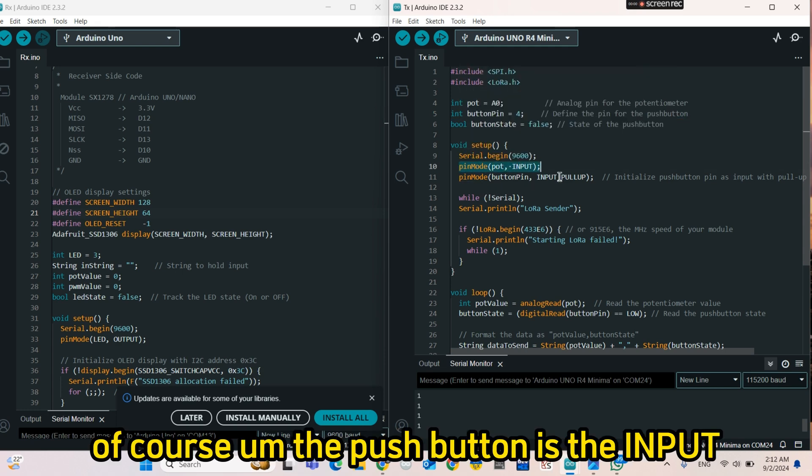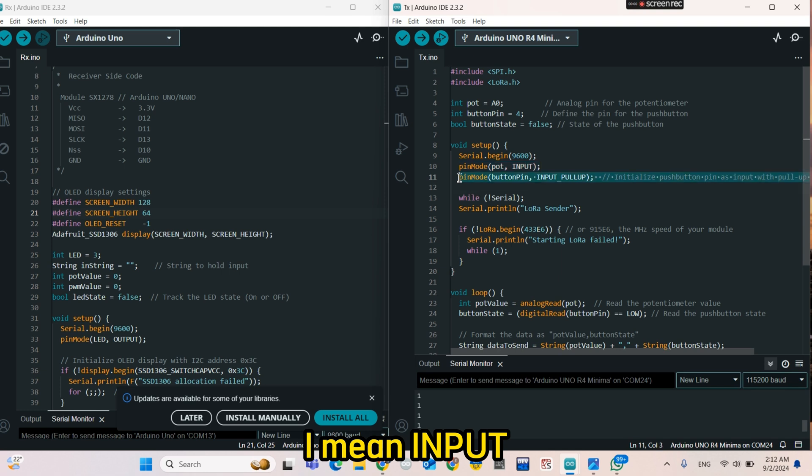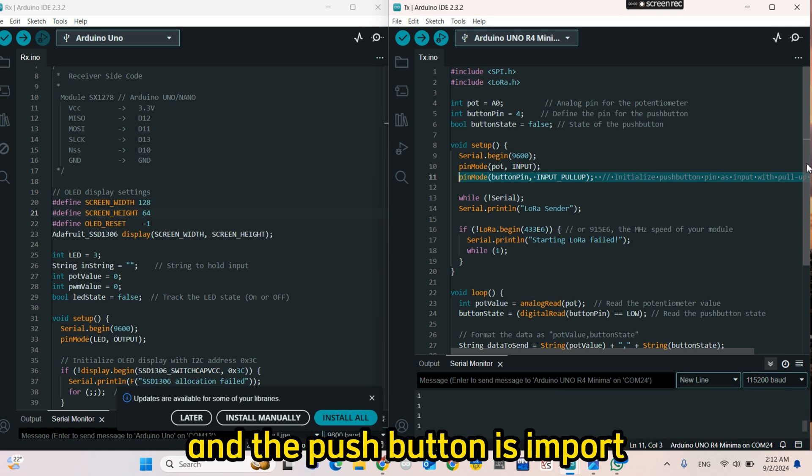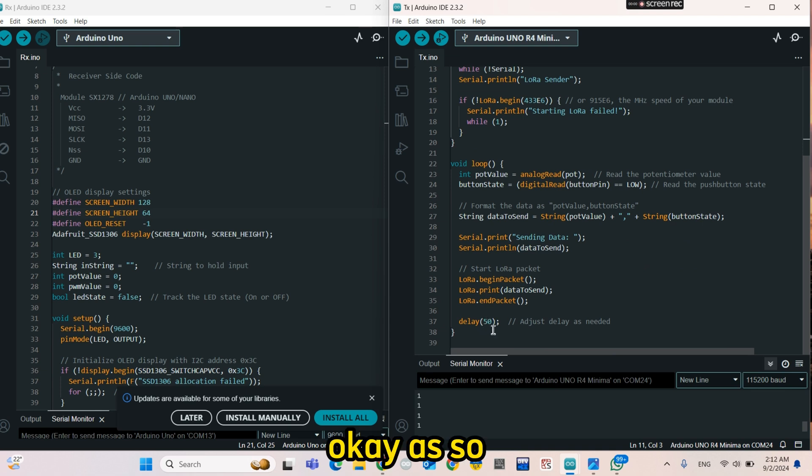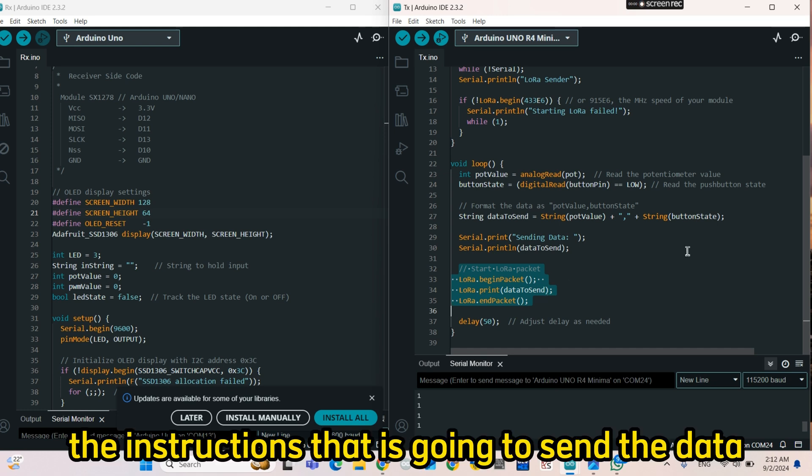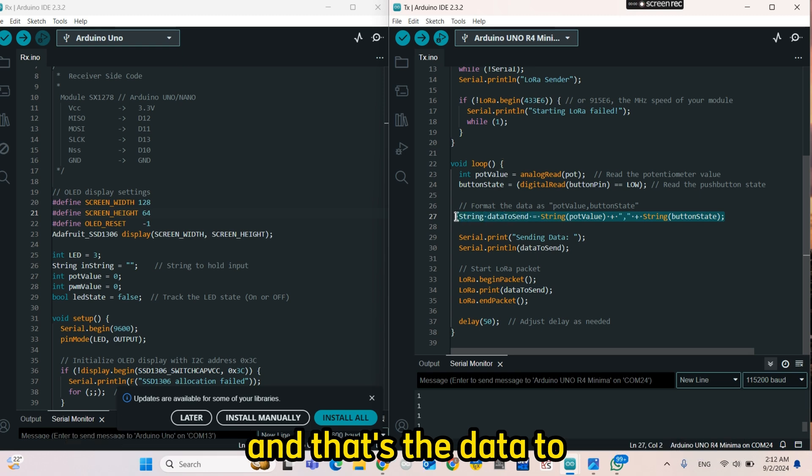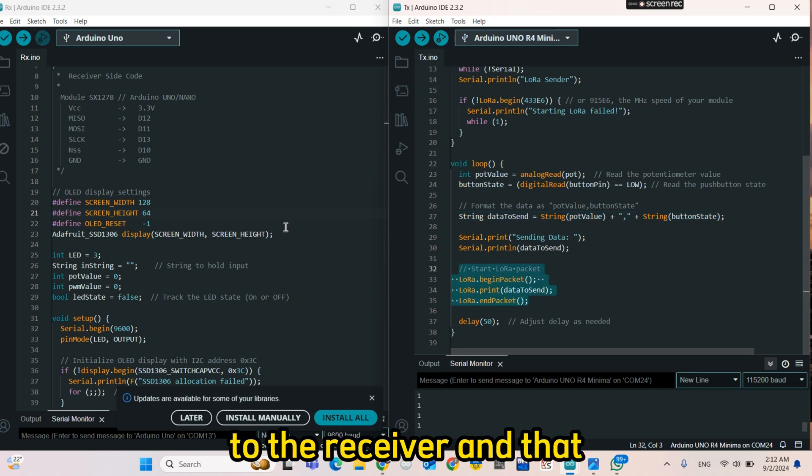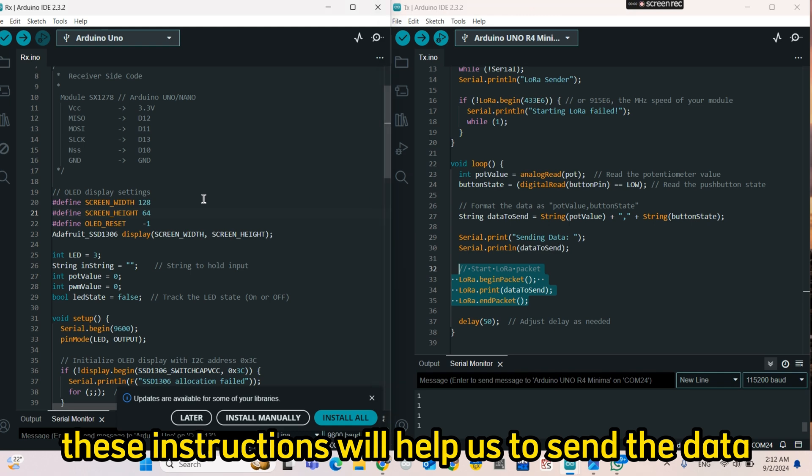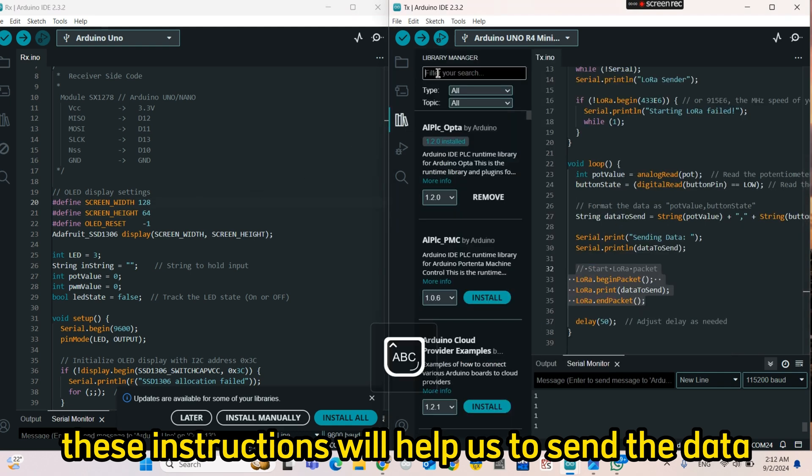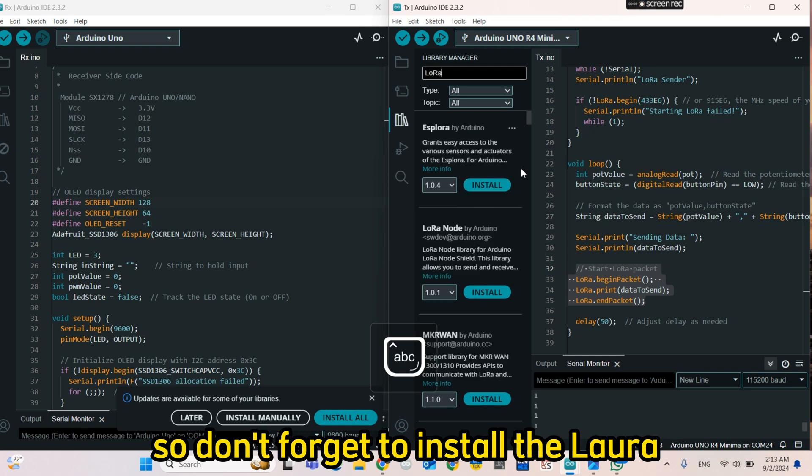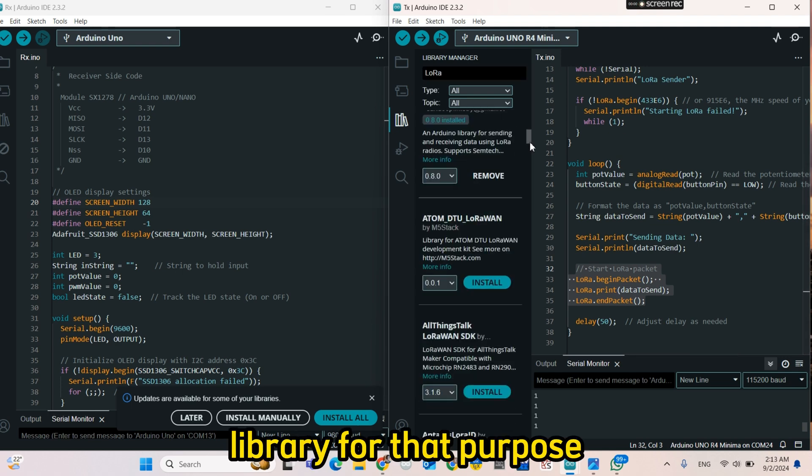Of course, the push button is the input. I mean, the potentiometer is input and the push button is input pull-up. So the instructions that is going to send the data, and that's the data to be sent to the receiver. And these instructions will help us to send the data. So don't forget to install the LoRa library for that purpose.